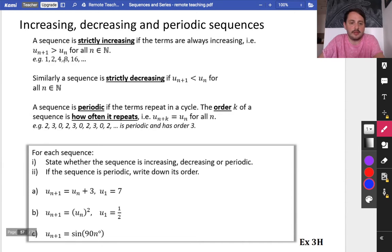So if you have 1, 2, 4, 8, 16, then this is a strictly increasing sequence. The reason it's called strictly increasing, which you might learn at university,